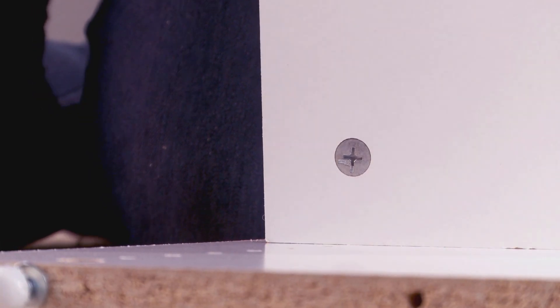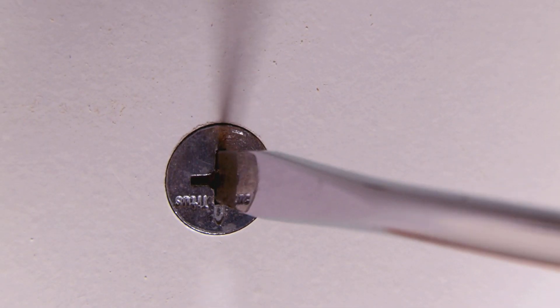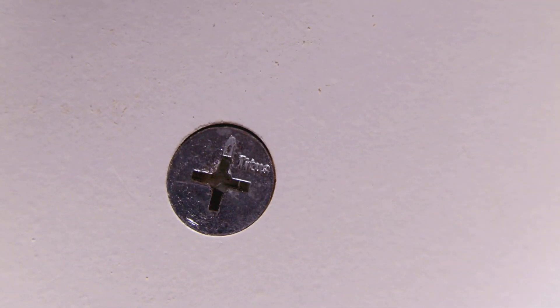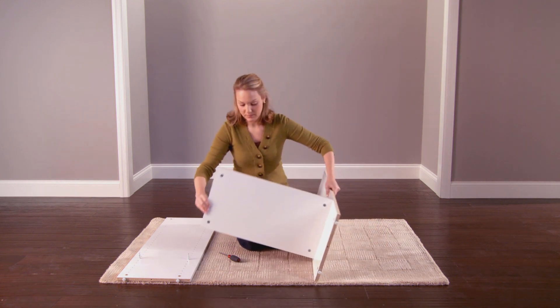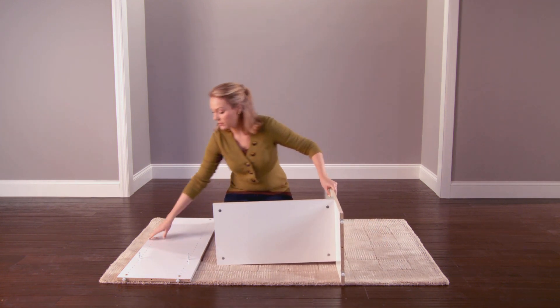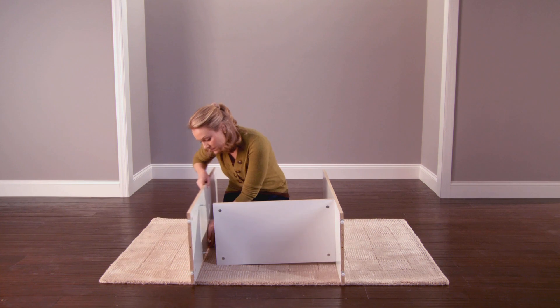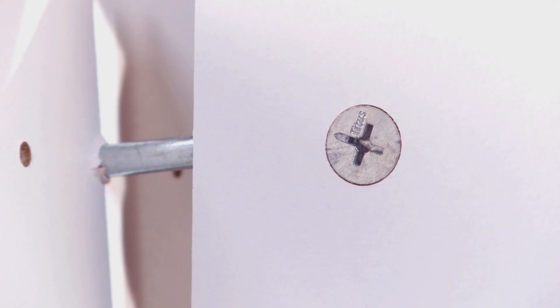Slide the bottom shelf onto one side panel and tighten the cam locks. Turn the assembly onto its side and attach the second side panel. Be sure that all unfinished edges are facing upwards during this assembly. Then tighten the cam locks.